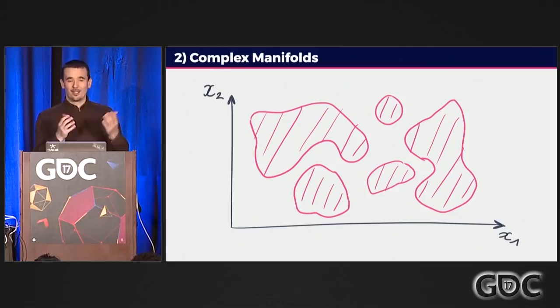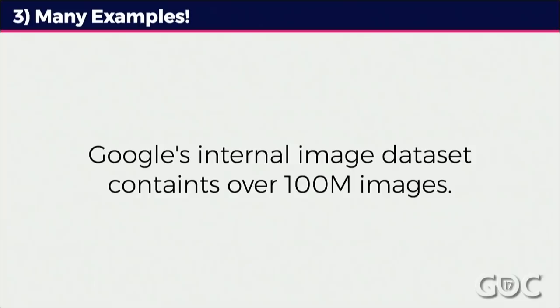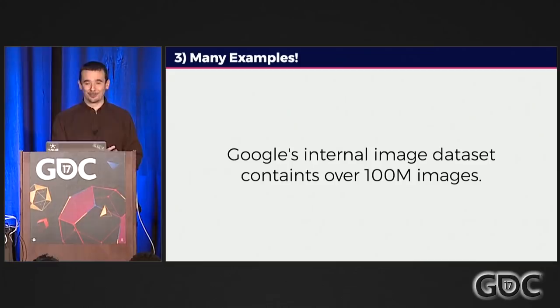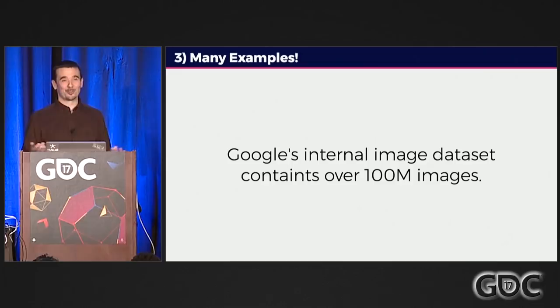Deep learning also requires you to have a sufficiently interesting problem. Think of deep learning as trying to approximate a manifold in n-dimensional space — a decision surface that separates true from false in your input space. Neural networks are very good at finding these complex decision surfaces, and if you just had a very simple decision surface, you wouldn't need a deep learning model. The third thing is having a lot of examples. Google's internal data set has over 100 million images, which is completely crazy, and it allows you to be very lazy about how to approach things.